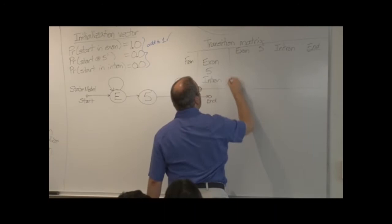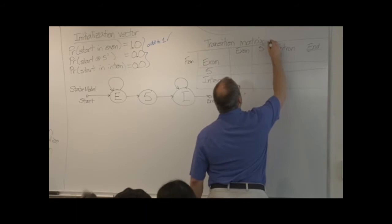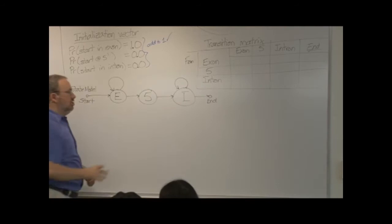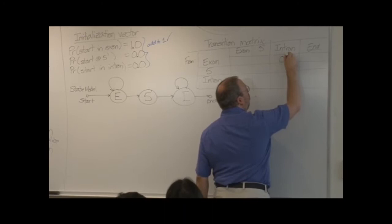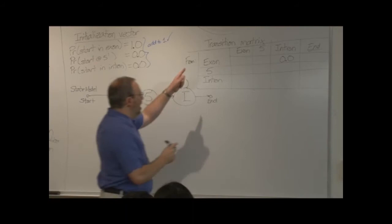So, let's fill this in. And some of these we can already fill in from this diagram. For example, what is the probability of going, according to this model, what's the probability of going directly from the exon to the intron? Zero. Zero. What other automatic zeros do we have here?